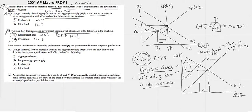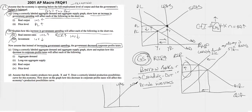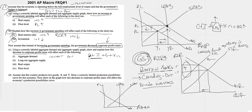Now assume instead of increasing government spending, the government decides to decrease corporate profit taxes. Using a correctly labeled aggregate demand aggregate supply graph, show and explain how this decrease in corporate profit taxes will affect the following. When the government decides to decrease corporate profit taxes, corporations are going to have more money — they're not being taxed as heavily on their profits. So they're going to have more money to invest and more money to spend. Out of C plus I plus G plus XN, you're getting C and I going up, which is going to increase aggregate demand. Investment and consumption are going to go up, therefore aggregate demand is going to increase.